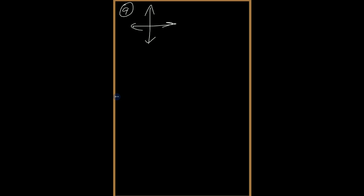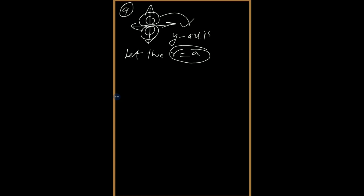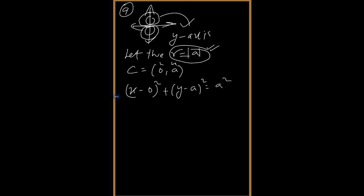In the 9th question, we have to form the differential equation of all circles touching the x-axis at the origin. By symmetry, the center lies on the y-axis, so the center is (0, a) where a can be any real number. The radius equals |a|. The equation of the circle is x² + (y − a)² = a².